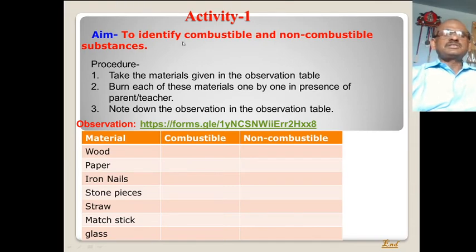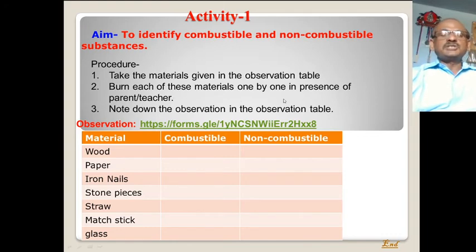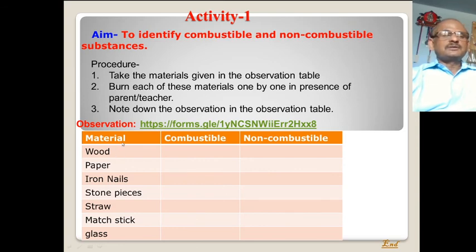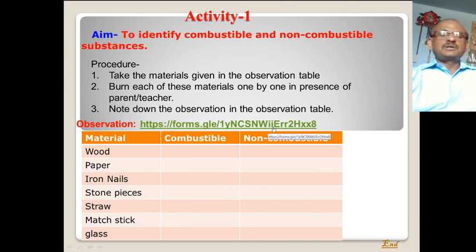The aim of this activity is to identify combustible and non-combustible substances. I have recommended materials which are available at your home. Take the material given in the observation table and burn each of these materials one by one in the presence of a parent. Do the activity with your parent present and note down your observations in the observation table. Then go to the link provided, fill in your observations, and the result will be reflected after submission of the activity in Google Form.